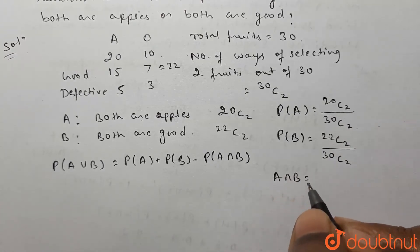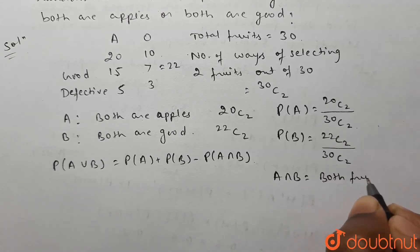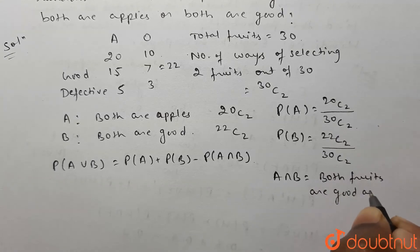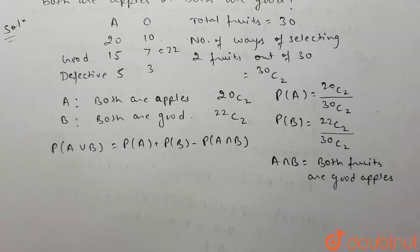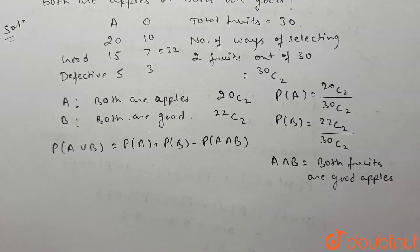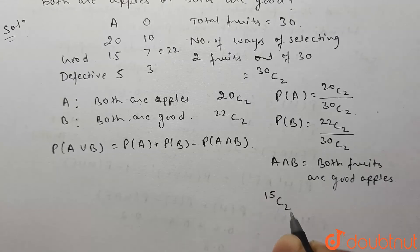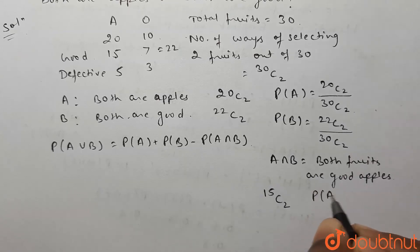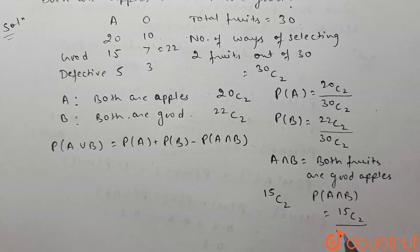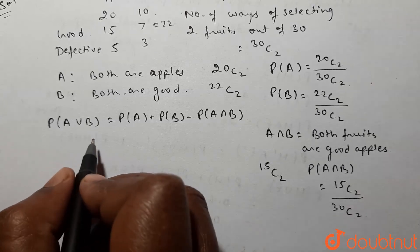A intersection B means both fruits are good apples. Out of 20 apples, 15 are good apples, so number of ways of selecting two good apples out of 15 good apples is 15C2. Probability of A intersection B will be 15C2 divided by 30C2.